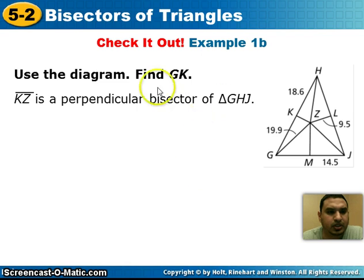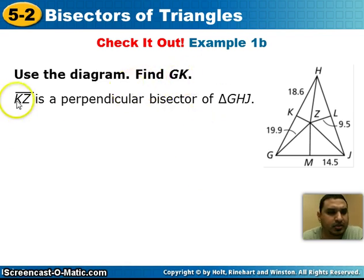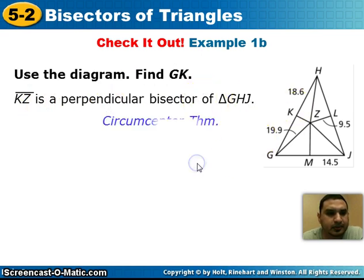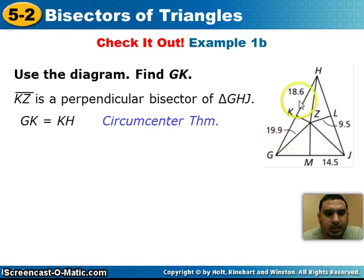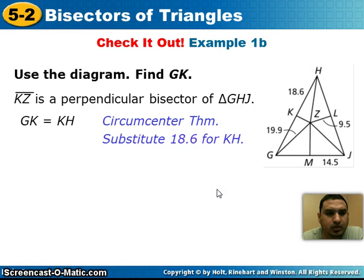Next example: use the diagram to find the distance from G to K. Segment KZ is a perpendicular bisector of triangle GHJ. The circumcenter theorem tells us that the distance from G to K equals the distance from K to H, so GK is 18.6 units.